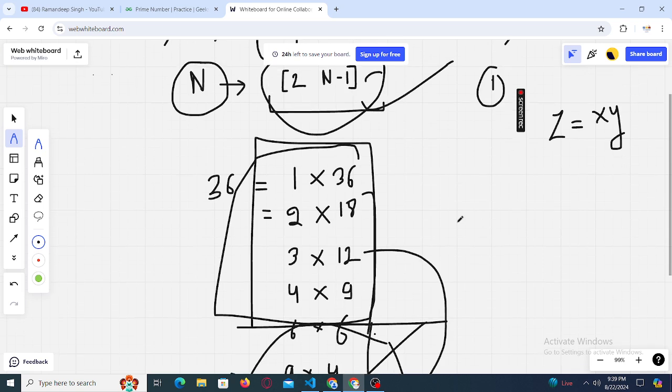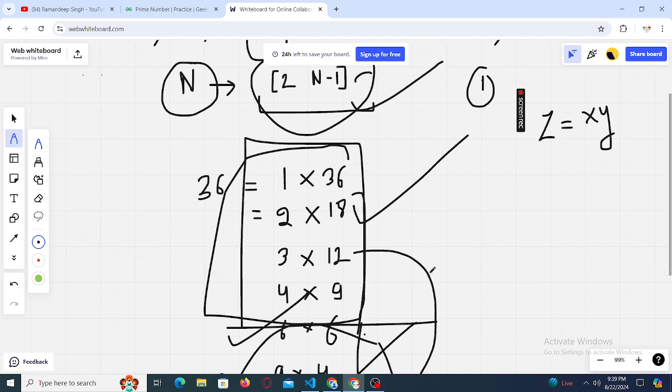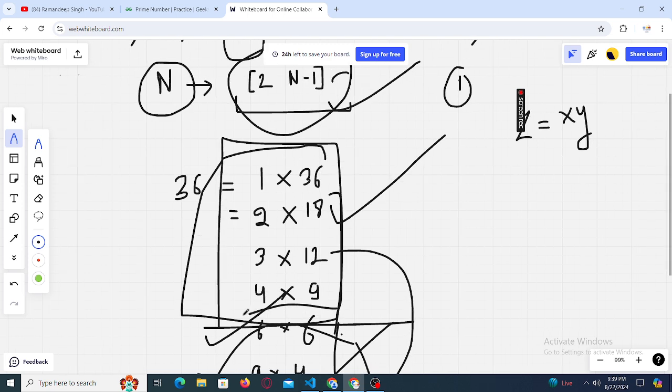That means we just start iterating from this 2 and we can move up to this 6, and this 6 is nothing but actually the square root of this number 36, right? That means for any number n, start iterating from 2 and keep picking up numbers up to root of n.